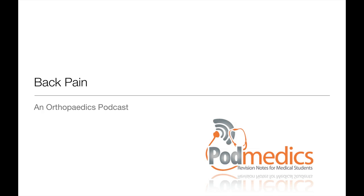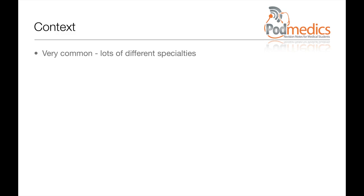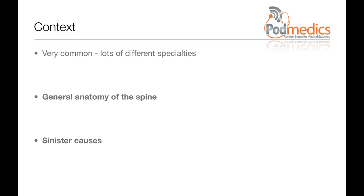Hello and welcome to this orthopaedics podcast on back pain. Back pain arising from the vertebral column is something commonly seen by physicians in a number of specialties. Causes of musculoskeletal back pain are often benign, but there are certain situations where the back pain may have a more sinister origin. During this podcast we'll start by reminding ourselves of some general anatomy of the spine, then look at some of the sinister causes of back pain in more detail, before briefly discussing the less serious pathologies that can affect the spine.